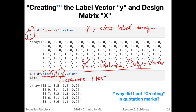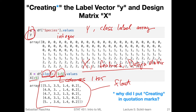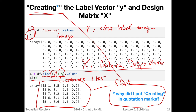Now we have both our label array y and our feature array X. I'm only showing the first five rows since otherwise it wouldn't fit. Note that the class label arrays are integers — we have an integer array here. The features are float values, which is also what scikit-learn expects — decimal point numbers or real values. I also put a little question here: why did I put 'creating' in quotation marks? Maybe a question for Piazza — we can discuss that there.